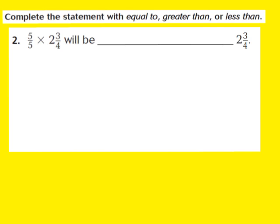Let's take a look at question number two together. The directions say complete the statement with equal to, greater than, or less than. Our problem for number two says: 5 fifths times the mixed number 2 and 3 fourths will be blank compared to the factor 2 and 3 fourths. So we have to decide, is the product going to be equal to, greater than, or less than the factor 2 and 3 fourths?